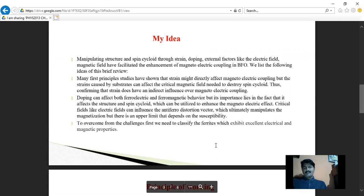Many first principles studies have shown that strain might directly affect the magnetoelectric coupling. But the strain caused by the substrate can affect the magnetoelectric cycloids, thus confirming that strain does have an indirect influence over magnetoelectric coupling. And next, doping can affect both ferroelectric as well as ferromagnetic behavior. Its importance lies in the fact that it affects the structure and spin cycloids, which can be utilized to enhance the magnetoelectric effect.